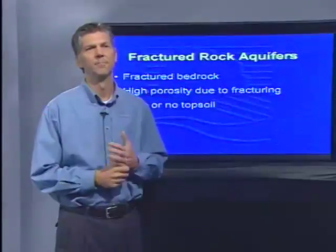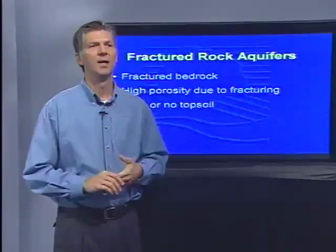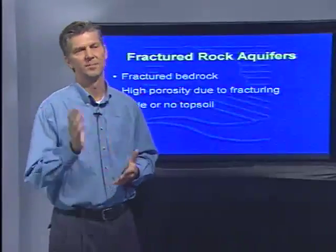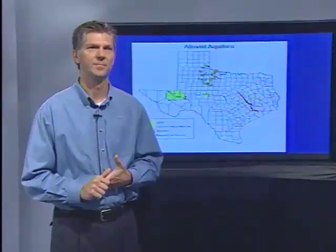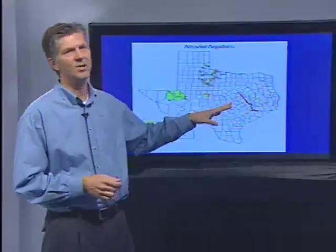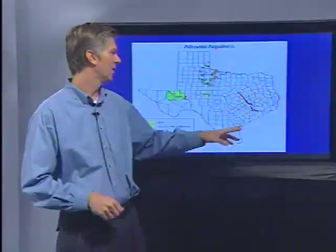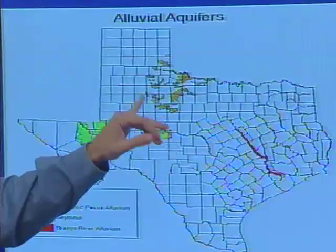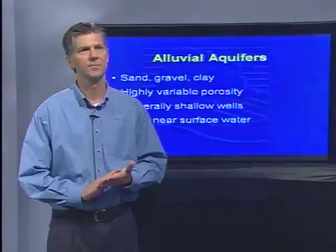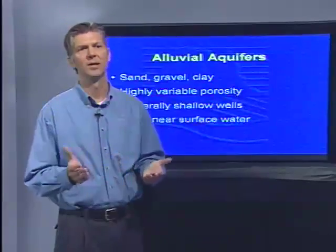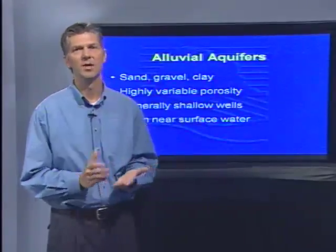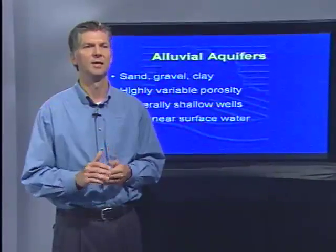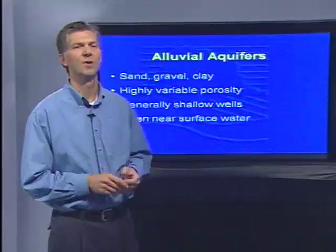Another major vulnerable aquifer type is fractured rock aquifers, most located around the Llano uplift area. These have high porosity and little or no topsoil to prevent downward migration of contaminants. Alluvial aquifers are widespread throughout the state, mostly around major rivers, with some older examples like the Seymour aquifer. They're composed of sand and gravel with high porosity. Most of these wells are fairly shallow — 50 feet or less — and are near surface water features like rivers and lakes.